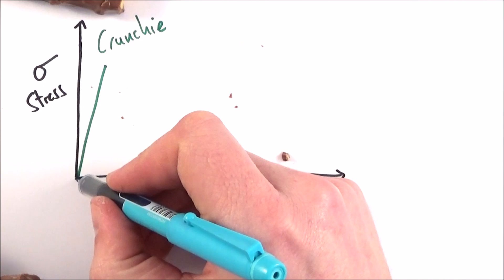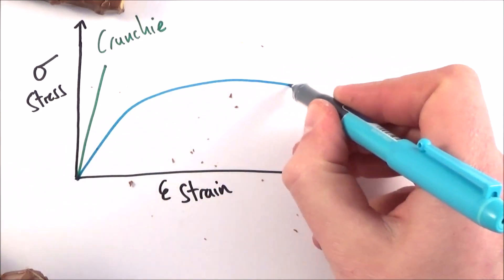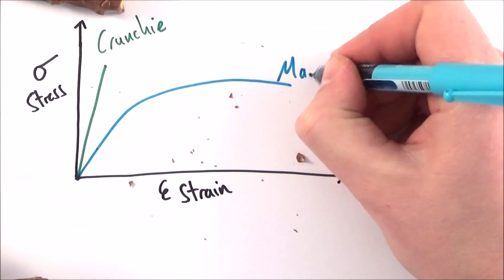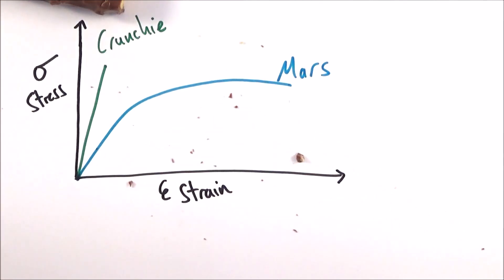And if we were to draw maybe the graph of a Mars bar, it might look a bit like this. So maybe this is our stress-strain graph for a Mars bar.